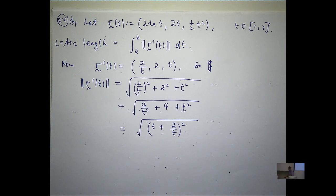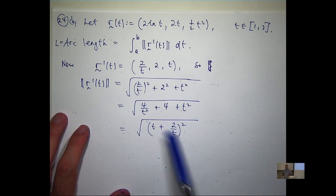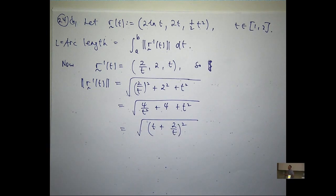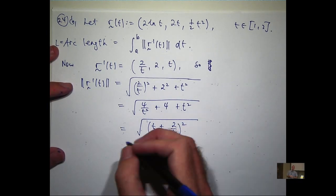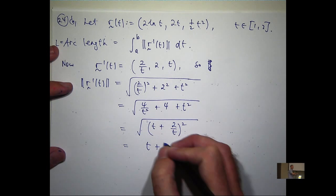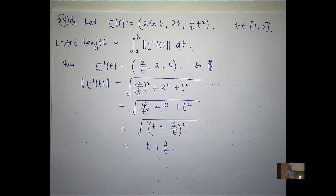What it means is I can just get rid of the square root sign, and because t's between 1 and 2, I don't have to worry about absolute values or anything like that. So that's what I'll get.